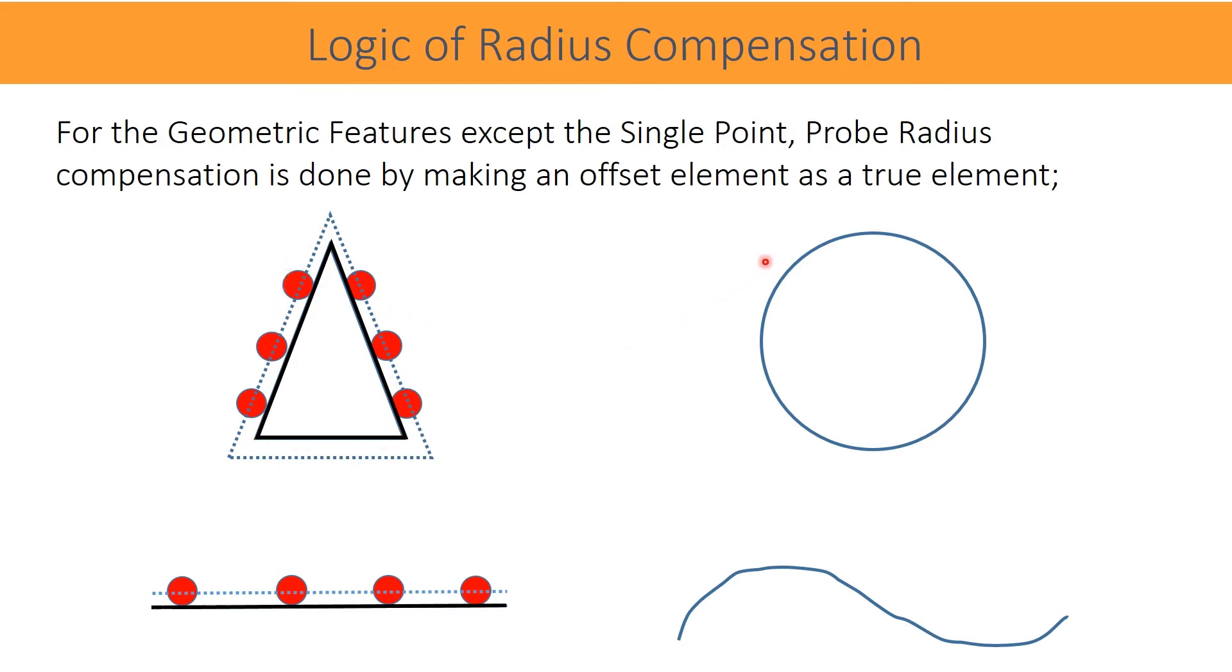Similarly, a circle is also measured. A circle is constructed from the probe points and it is moved or offset by a radius value.